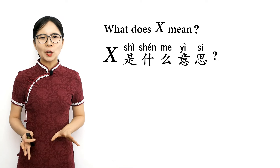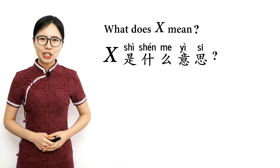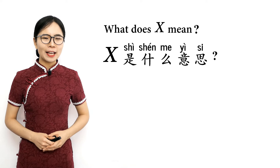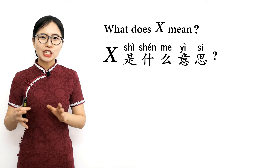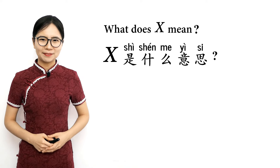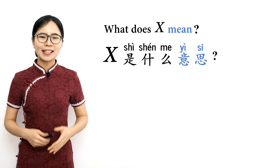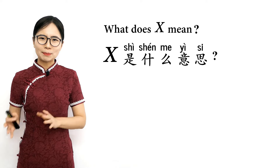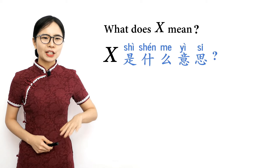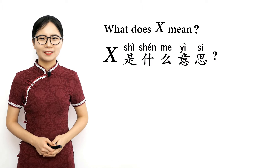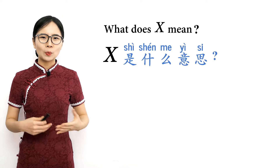If you want to know what a Chinese word or phrase means, you can ask by saying the word or phrase followed by 是什么意思. For example, if you want to know what 老师 means, you can say 老师是什么意思 — what does 老师 mean? 是 is the verb 'to be,' 什么 means what, and 意思 means meaning. So 'X is what meaning' — what does X mean? Please repeat after me: 是什么意思, 是什么意思 — what does it mean?